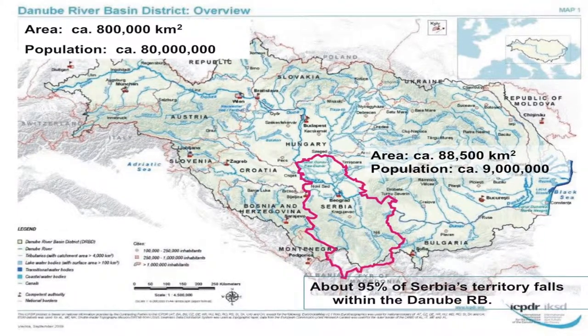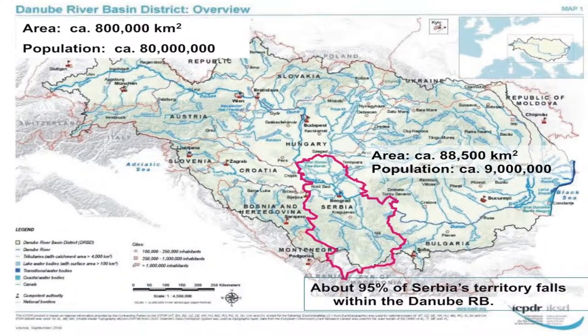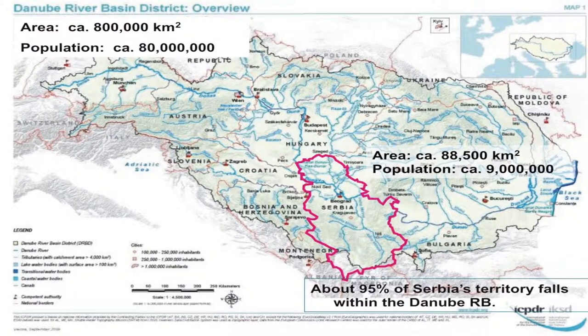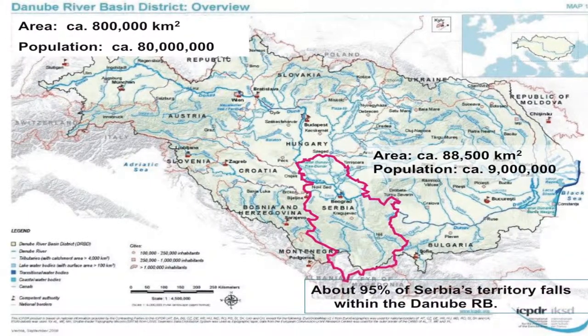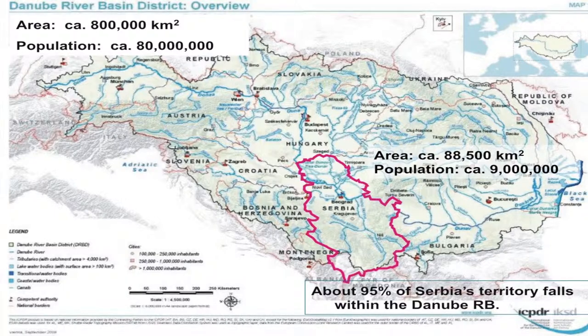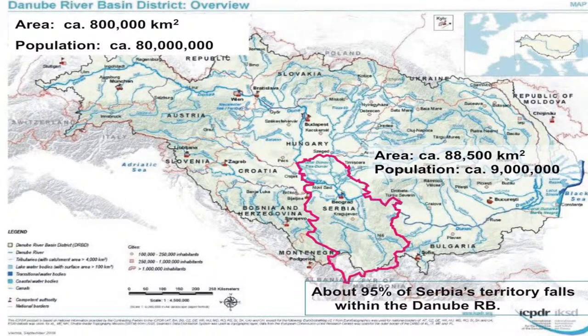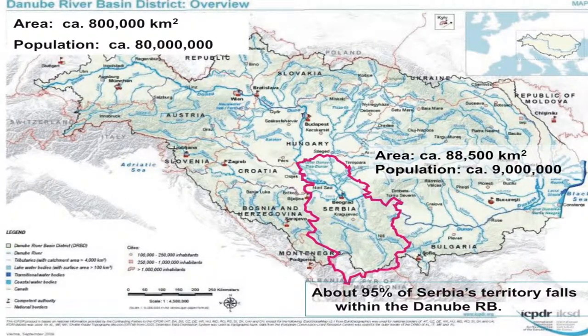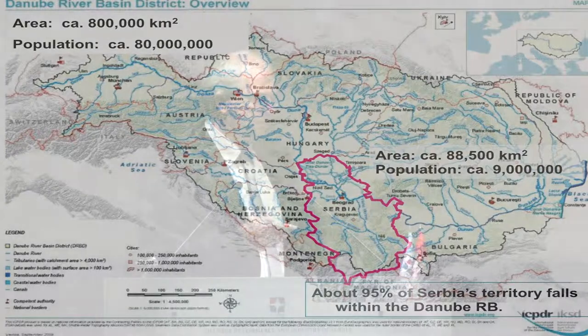As seen from Mr. Zavadsky's presentation, Serbia is practically one-tenth of the Danube River Basin both in area and population, placed somewhere in the middle of its catchment. This means that in our river basin management strategy we must consider both upstream and downstream countries. Practically all of Serbia — 95% of Serbian territory — falls within the Danube River Basin.